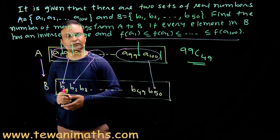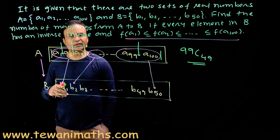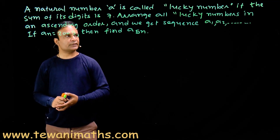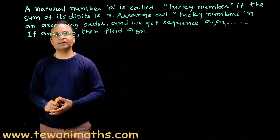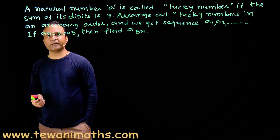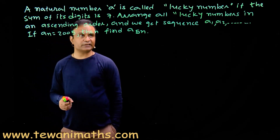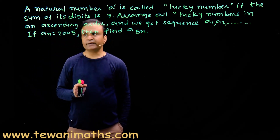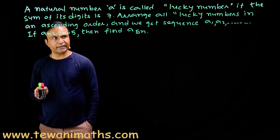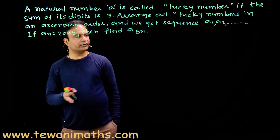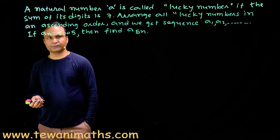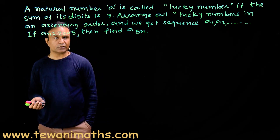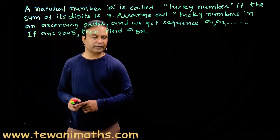This is a very nice question from permutation combination using the concept of partitions. The next question is from permutation combination and number theory. A natural number is called a lucky number if the sum of its digits is 7. Arrange all lucky numbers in ascending order to get the sequence a₁, a₂, a₃, and so on. If the nth term of this series is 2005, find the value of a₅ₙ.